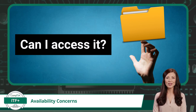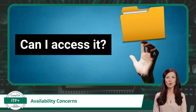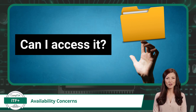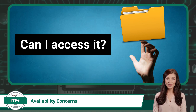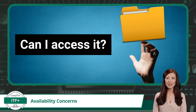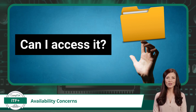Availability, as it applies to IT, is a fundamental security principle that ensures data is ready and accessible whenever you need it. In a broader context, availability makes certain that systems, services, or resources are consistently operational and can be accessed without interruptions. This continuous access is crucial because users, whether they are individuals or businesses, rely on certain services to be available whenever they need them.